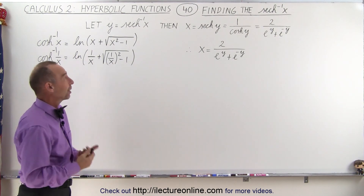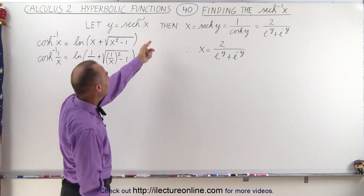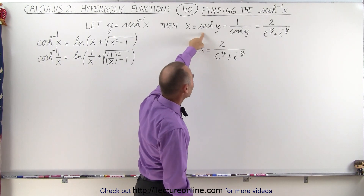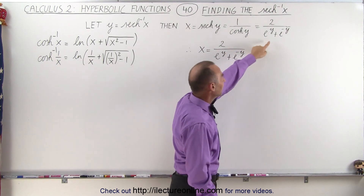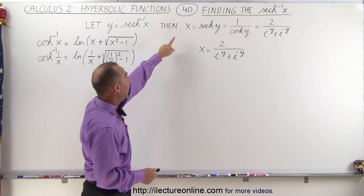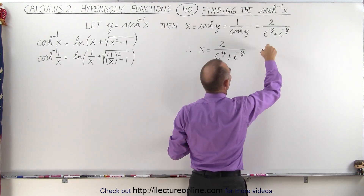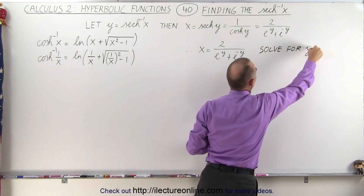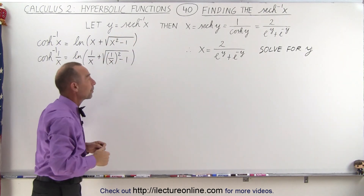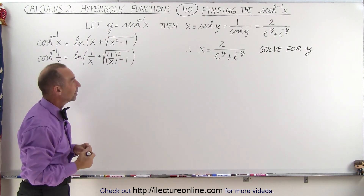We're going to try to find the expression. When we let Y equal the inverse hyperbolic secant of X, then X equals the hyperbolic secant of Y. Since the hyperbolic secant is equal to 1 over the hyperbolic cosine, it can be written in terms of the exponentials. Therefore, X can be set equal to this, and now all we have to do is solve this for Y. We define Y as the inverse hyperbolic secant of X, so solving for Y will allow us to figure out what that is equal to.